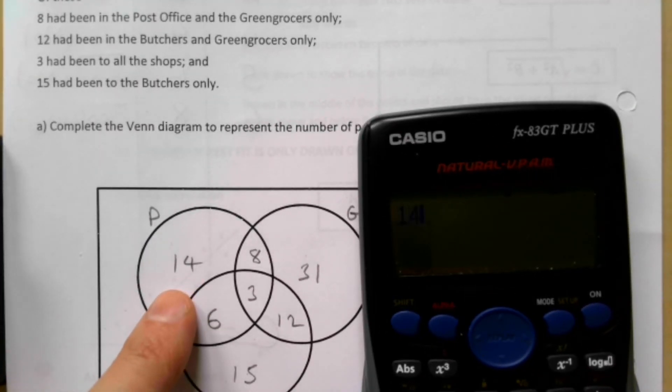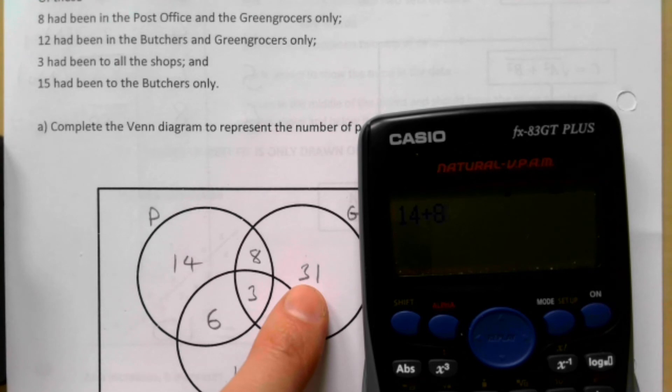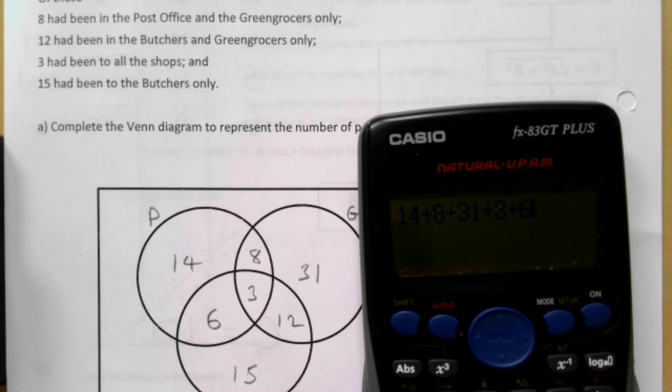So it's going to be 14, plus 8, plus 31, plus 3, plus 6, plus 12, plus 15, and that gives me 89.